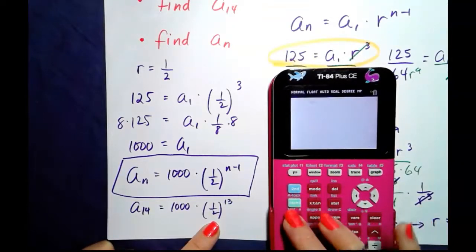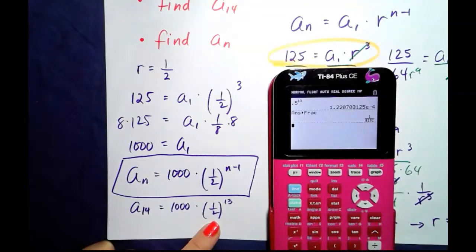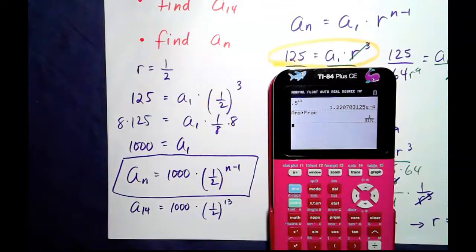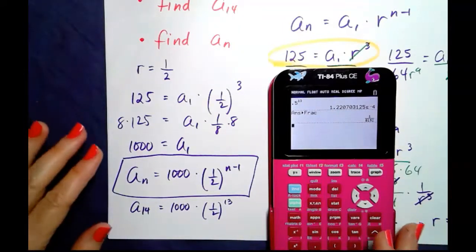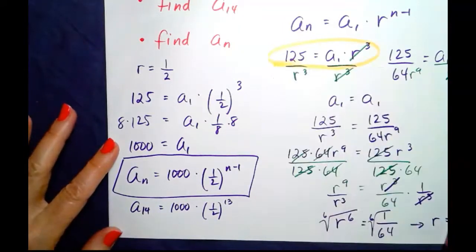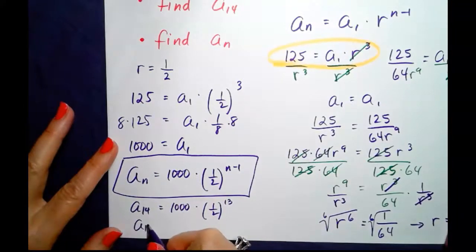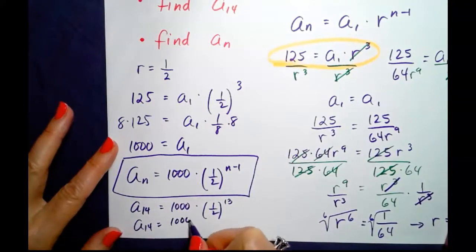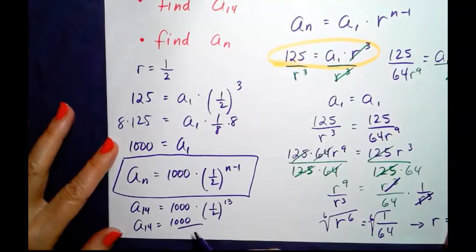Going to math, enter, enter, hopefully it's going to give us a fraction: 1 over 8,192. So a sub 14 equals 1000 over 8,192.